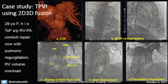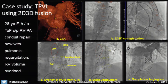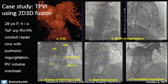This is the 2D-3D workflow. This is a 28-year-old lady with tetralogy of Fallot who underwent RVPA conduit repair and presented with pulmonic regurgitation. Here we have the pre-procedural CT angiogram with the regions of interest marked, and these are our 2D fluoroscopy images. We co-registered the CT angiogram with the fluoroscopy images, which allows us to overlay the regions of interest onto live 2D fluoroscopy.